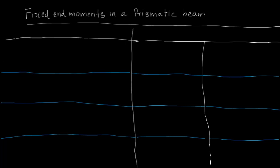In this video we will see some typical formulas for calculation of fixed end moments in a prismatic beam. A prismatic beam is a beam which keeps the cross-section constant throughout its length, which covers most practical cases.